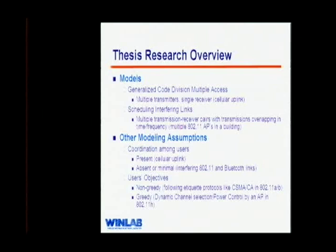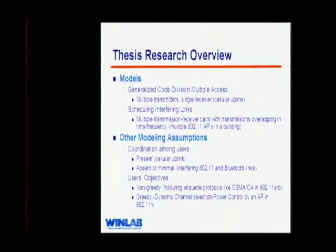For all the problems I will talk about today, there are actually two different underlying models. The first is a multiple access channel where there are multiple transmitters and a single receiver — we assume a generalized CDMA kind of system. One example is cellular uplink. The second model is interfering links, where there are multiple transmitter-receiver pairs, and we consider scheduling these interfering links to maximize certain metrics. An example is multiple 802.11 APs in a building, each with its own radio — all those transmissions overlap in time and frequency and interfere with each other.